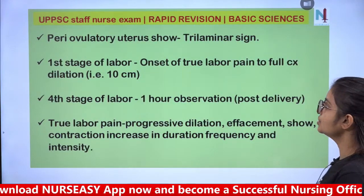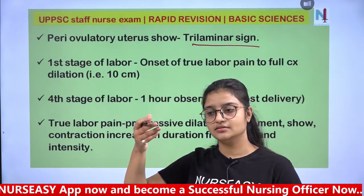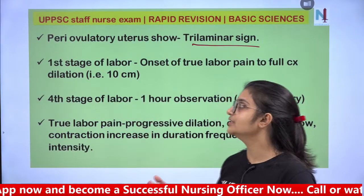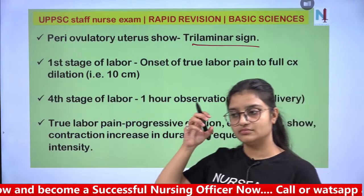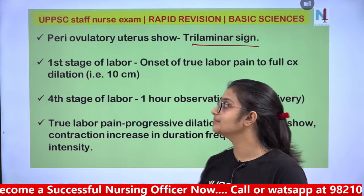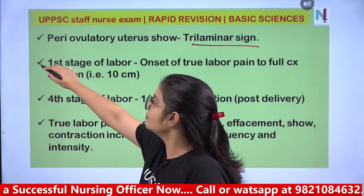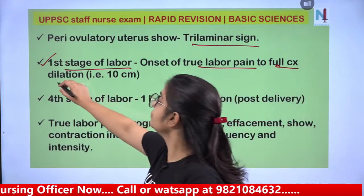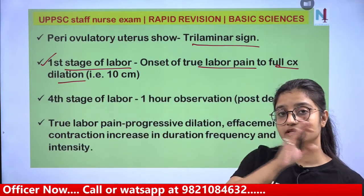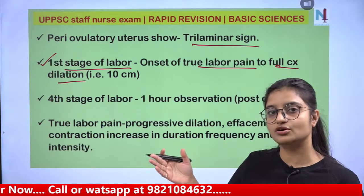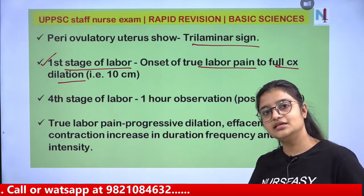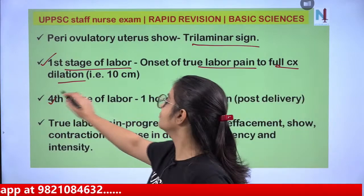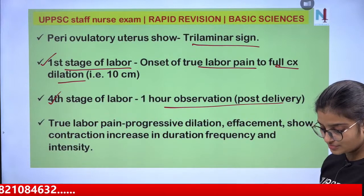Periovulatory uterus shows a trilaminar sign on ultrasound — to see the three layers of the endometrium, how thick they are, and whether they are ready for implantation. Labour has four stages: Stage 1 is from true labour pain to full cervical dilatation (10 cm); Stage 2 is from full dilatation to delivery of baby; Stage 3 is delivery of baby to placental delivery; Stage 4 is one hour observation post-delivery.